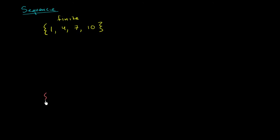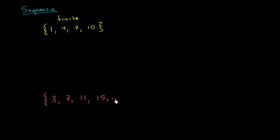I could also have an infinite sequence. An example: let's say we start at 3 and we keep adding 4 — so 3, 7, 11, 15. And you don't always have to add the same thing; we'll explore fancier sequences. The sequences where you keep adding the same amount, we call these arithmetic sequences, which we will also explore in more detail. To show that this is infinite, I'll put three dots — this just means we keep going on and on. So we could call this an infinite sequence.